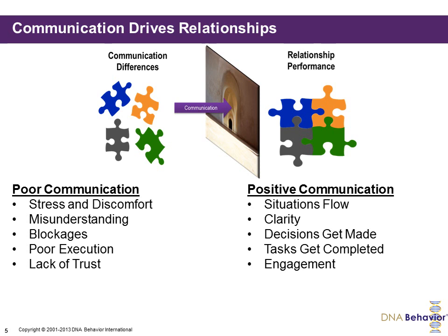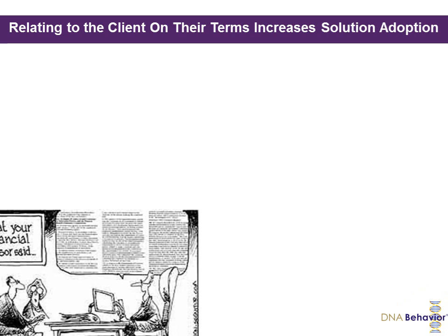As individuals, we're all unique, so we're all going to have a unique communication style, even though at a general level we can break it down into four primary communication styles. It's important in building long-term trusting relationships that we understand the communication styles of each person, because when there is poor communication there'll be stress and discomfort, misunderstanding, blockages, and lack of trust. That's going to be the blockage to good decision-making, and ultimately this is where clients don't feel engaged and leave the business. So knowing how to communicate with every person is going to be very important to building long-term engagement, getting advisory tasks completed, and delivering outstanding client service.